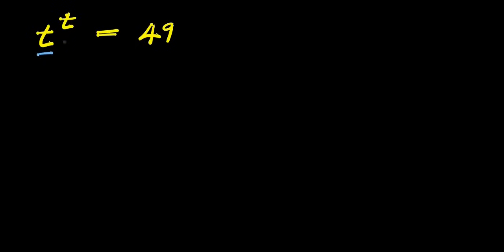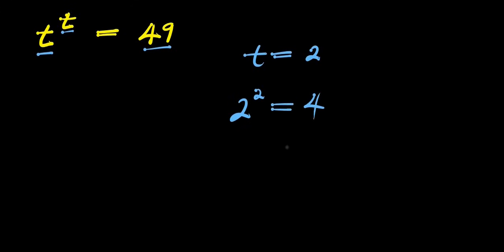Hello. How to solve t to the power of t equals 49 — we are solving for the value of t that will satisfy this equation. If we let t equal 2, we have 2 to the power of 2, which equals 4, and that's not 49. If we consider 3, we have 3 to the power of 3.